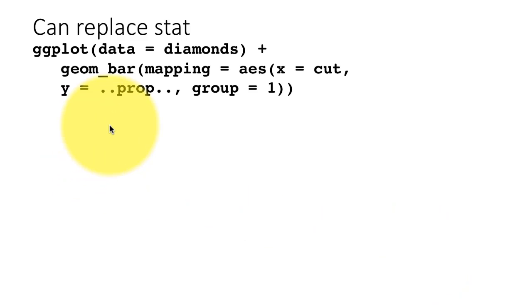In order to get proportions, you have to say x equals cut, whatever is the variable on which you're doing the bar chart, y equals ..prop.. This is a special indication to the system that I want you to plot the proportions.